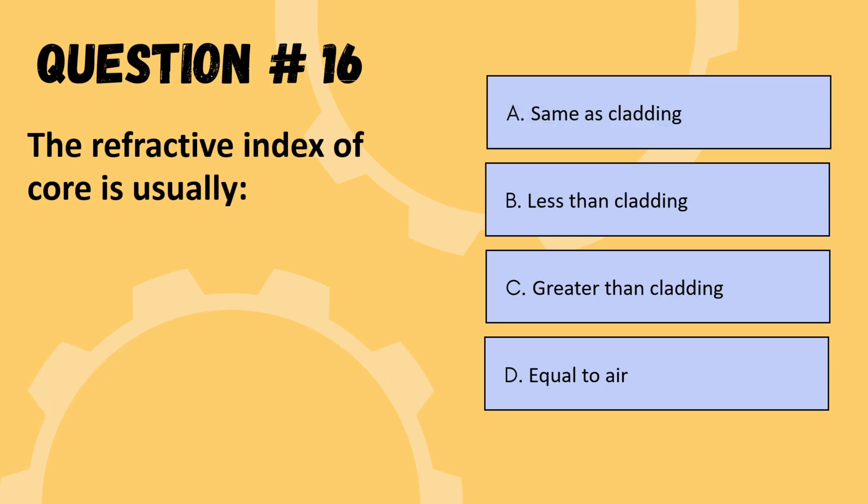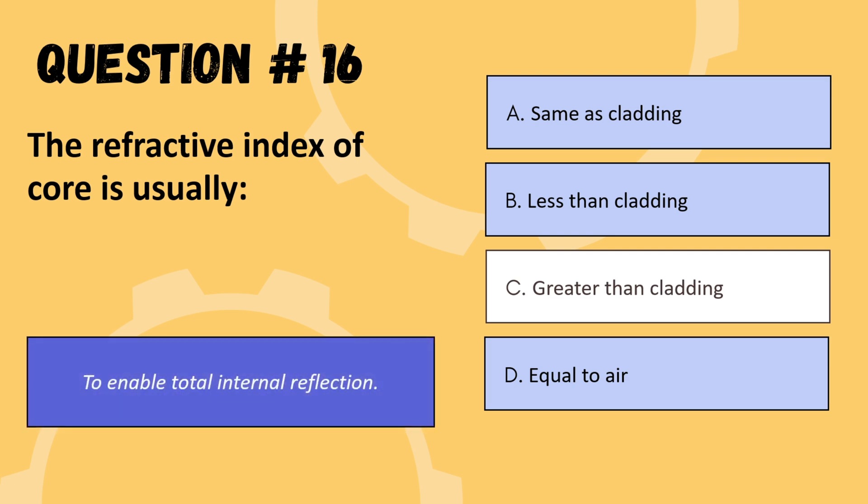Next question: the refractive index of the core is usually — options are same as cladding, less than cladding, greater than cladding, or equal to air. The correct option is C: greater than cladding.